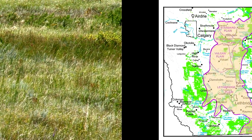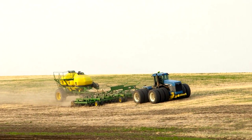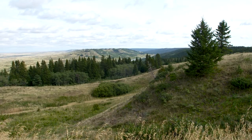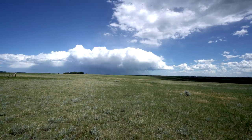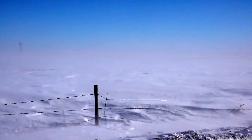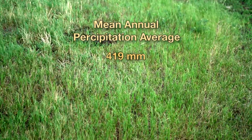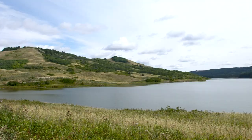The mixed grass — formerly the dark brown soil zone — occurs in the arc to the west of the dry mixed grass. The majority of the plains portion of the mixed grass has now been cultivated, but two large uplands remain in the Cypress and Milk River uplands. Like the dry mixed grass, the mixed grass has short summers with warm to hot days and cool nights and long cold winters. Mean annual precipitation averages 419 millimeters, being slightly lower on the plains area and higher in the two uplands.